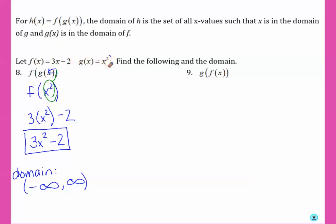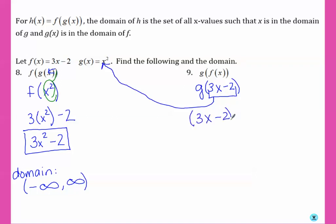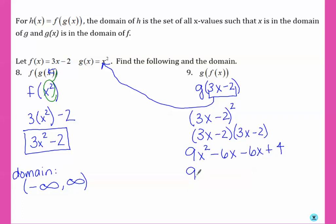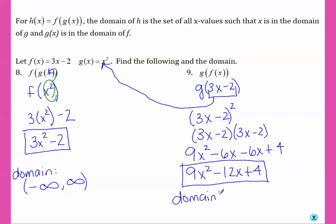For g of f of x, we're taking g and putting f of x, which is 3x minus 2, inside. So we're going to take that whole thing and plug it in where the x was in g, giving us 3x minus 2, squared. Squaring means multiplying it by itself, so we get 9x squared minus 6x minus 6x plus 4. Combining like terms, that's our simplified answer. Since we have no fractions or radicals, the domain is again negative infinity to positive infinity.